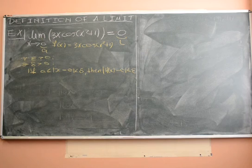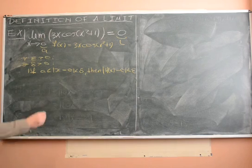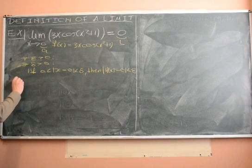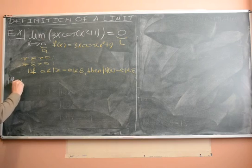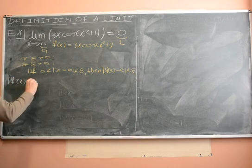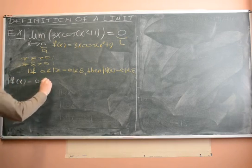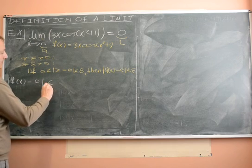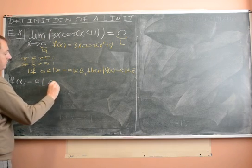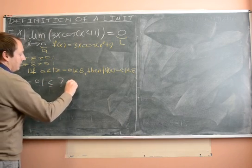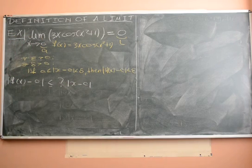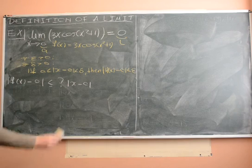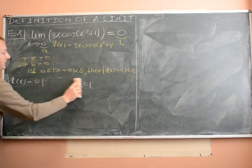And again, we do that by first trying to find some estimate for f of x minus L — in this case L being 0 — and to prove that this is less than or equal to some expression involving the distance between x and 0. So let's see how we'll do that for this particular function.